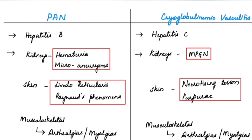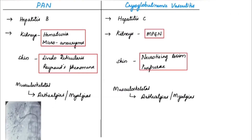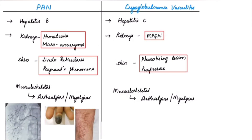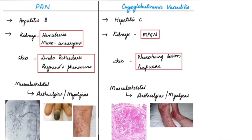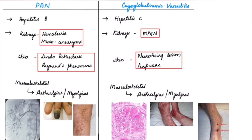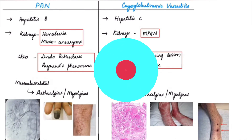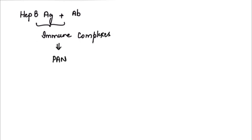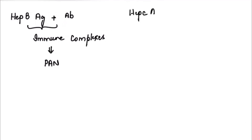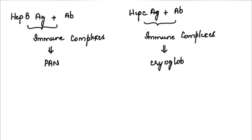For image-based questions: clues favouring PAN include a renal angiogram showing microaneurysms, or a picture of Raynaud's phenomenon or livedo reticularis. Clues for cryoglobulinemic vasculitis include a picture of MPGN, or purpura or necrotic lesions on the leg. To summarize: immune complexes from hepatitis B antigen produce polyarteritis nodosa, while immune complexes from hepatitis C antigen produce cryoglobulinemic vasculitis.